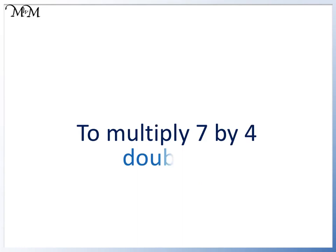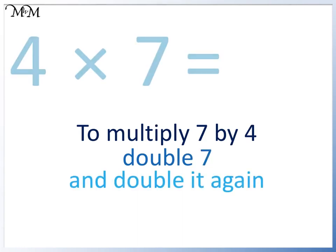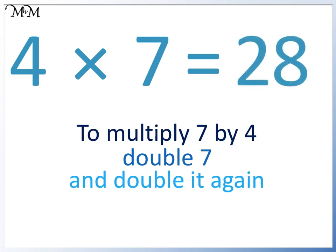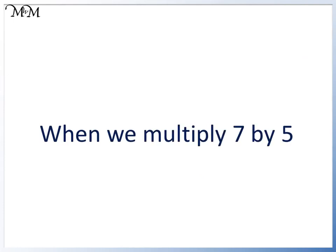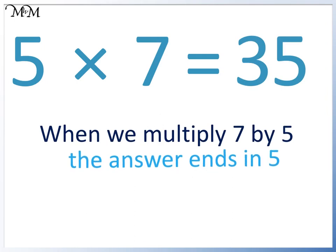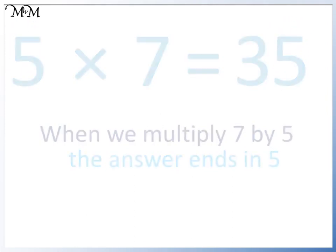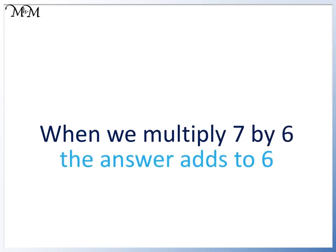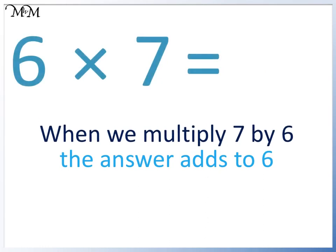To multiply 7 by 4, double 7 and double it again. We double 7, which is 14, and double it again — we get 28. We can remember this because half of 4 is 2 and double 4 is 8. When we multiply 7 by 5, the answer ends in 5: 5 times 7 equals 35. When we multiply 7 by 6, the answer's digits add to 6: 6 times 7 equals 42.